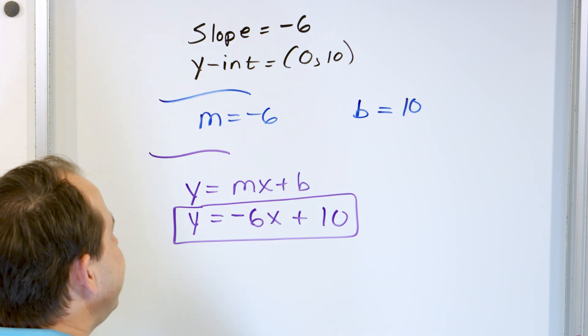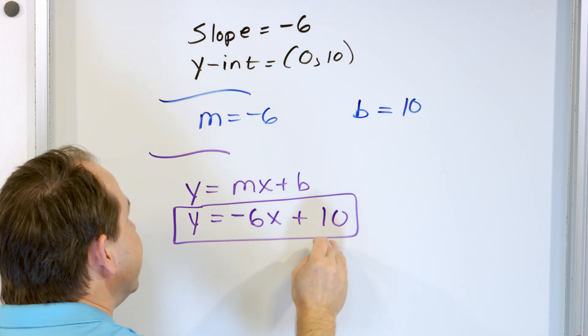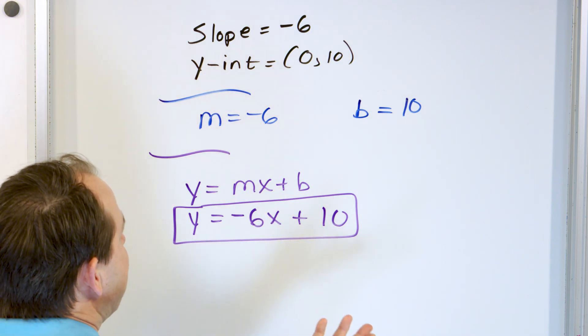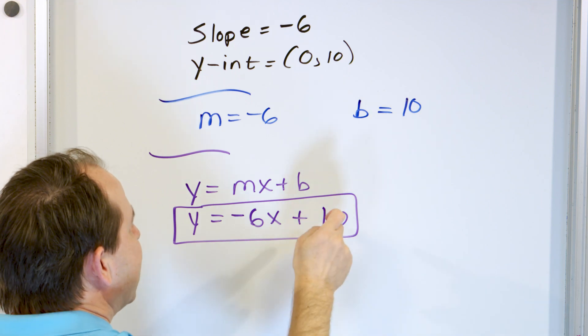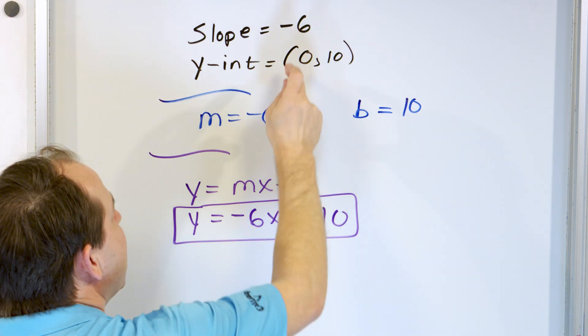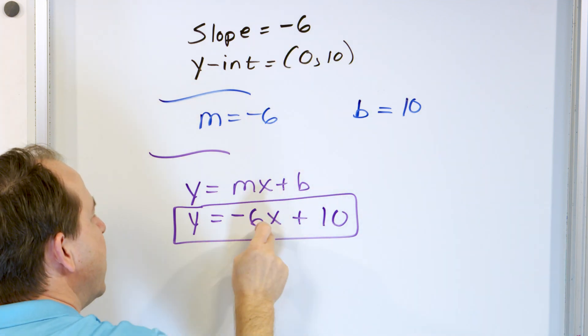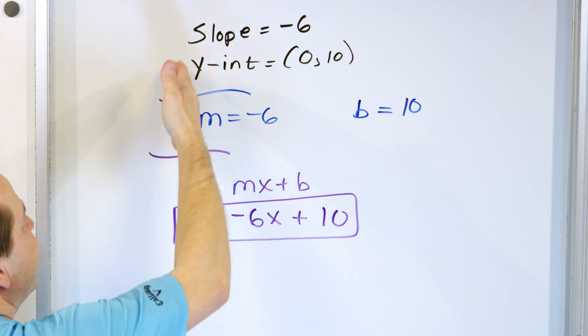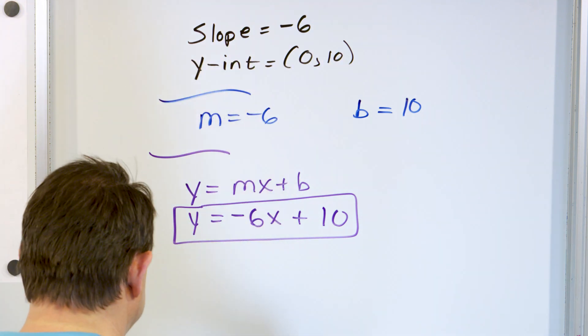If you were to graph this, you would find that it has this slope and this y-intercept. The y-intercept comes from here, and the slope comes from there. This is the equation of the line that has these characteristics.